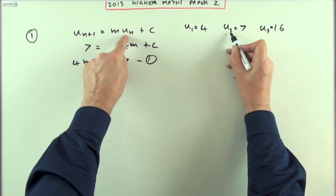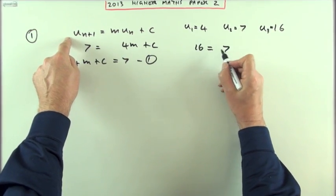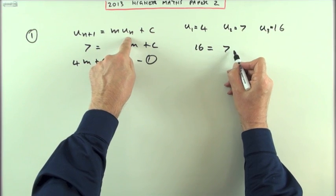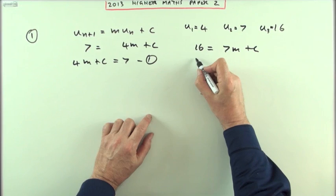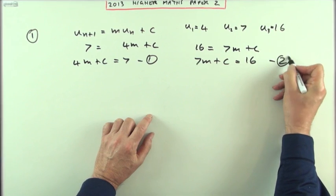Same again. If I start with u2, if I start with 7, I'll get the answer 16. So it'll be 7m plus c. 7m plus c equals 16. There's another equation.